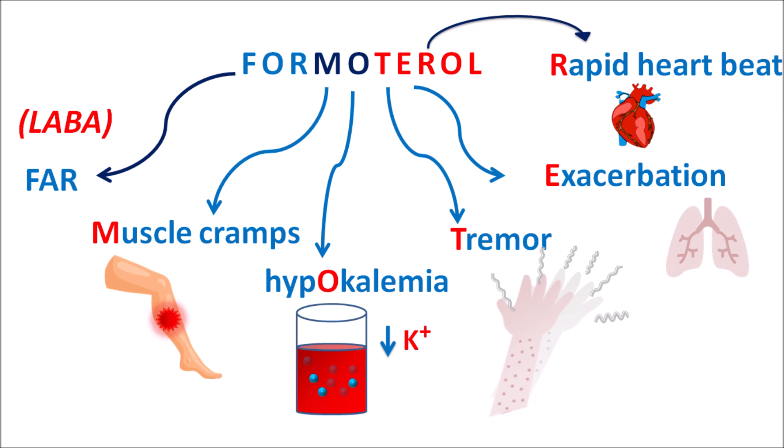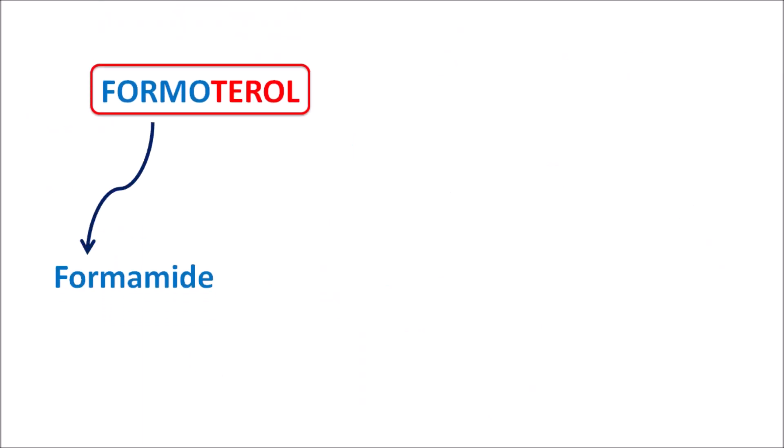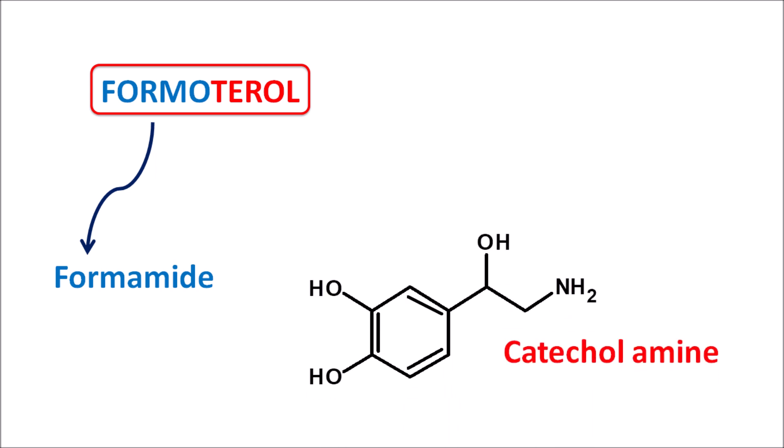The prefix 'for' indicates it is a four-acting — so it is a long-acting beta-2 agonist. Actually, the prefix 'formo' indicates that this drug has a formamide moiety. Being a beta-2 adrenergic agonist, this drug has some structural similarity with the catecholamines. Catecholamines have the OH group at the third and fourth position of the benzene ring, and this OH group is replaced with the formamide in Formoterol.